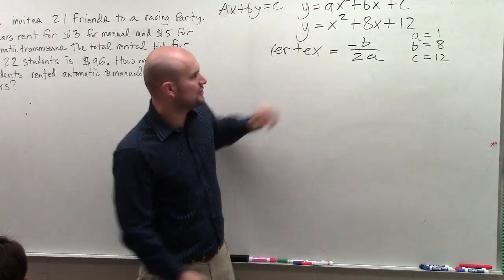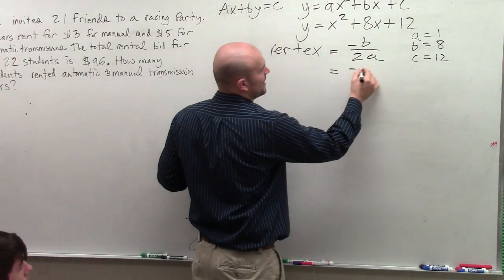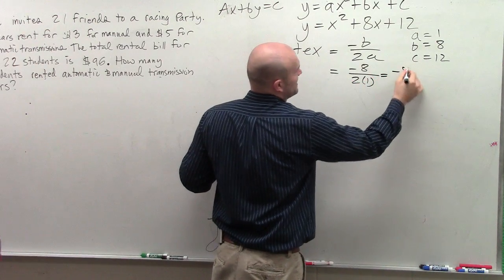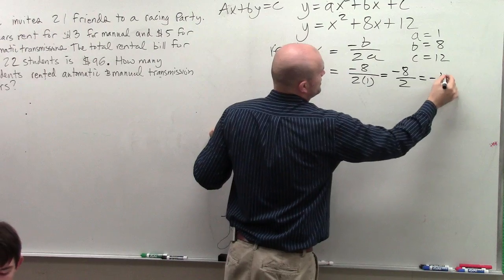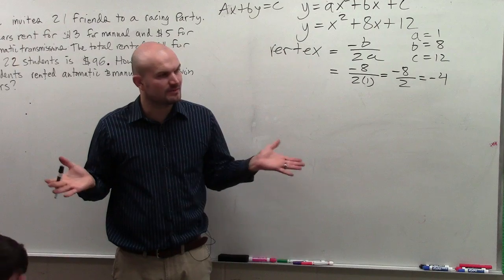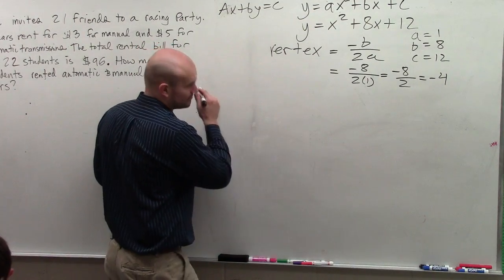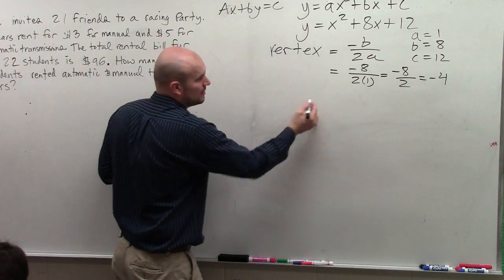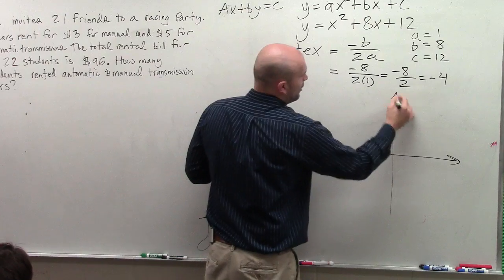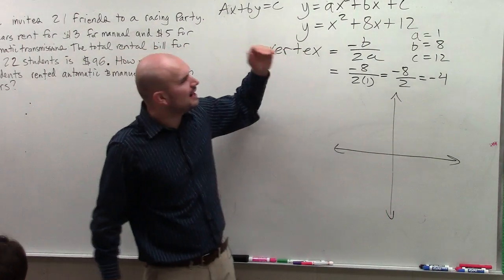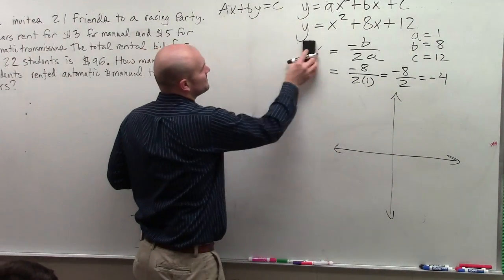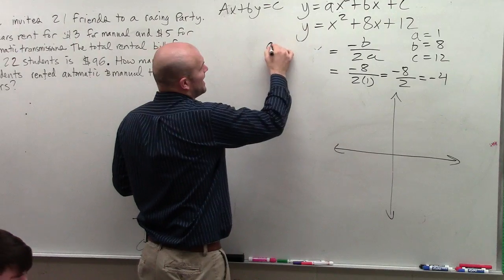Now, I'm just going to evaluate to find my vertex. So, I do opposite of 8 divided by 2 times 1, which equals negative 8 divided by 2, which equals negative 4. Everybody follow me? So, now, I don't know my vertex, though. I don't know what that point is.